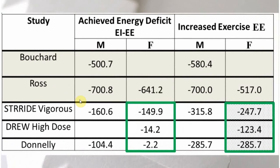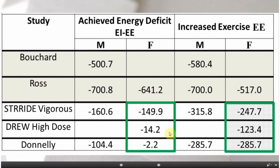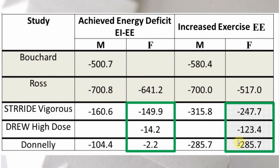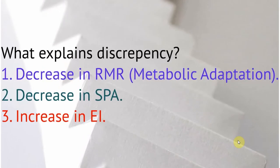On the other hand, these are the free-living studies, and that's where you see discrepancy. You see that the magnitude of achieved energy deficit is much lower than the magnitude that's been increased through physical activity. So there's a gap between the two. The question is, why?